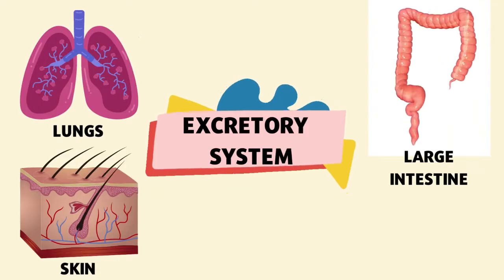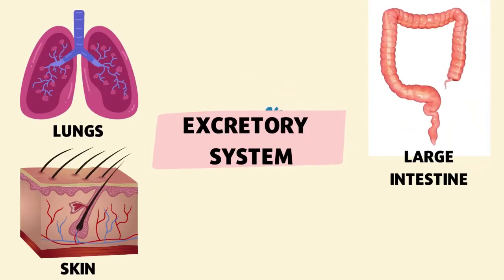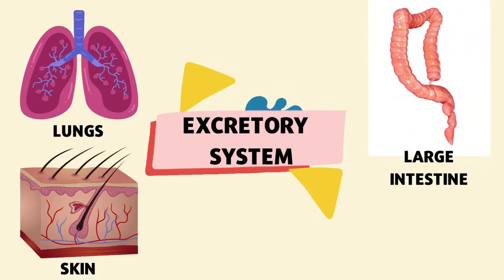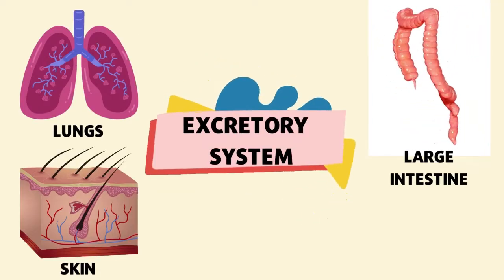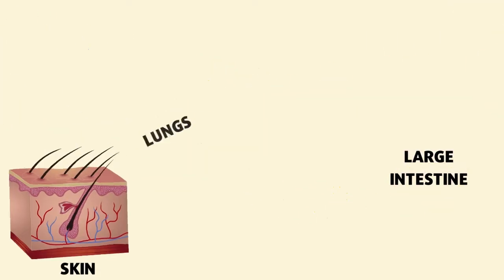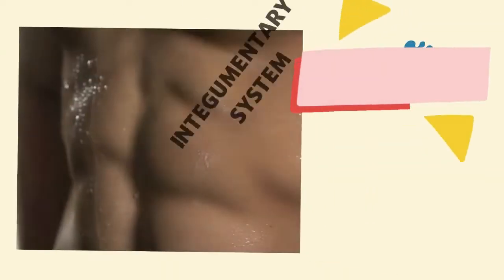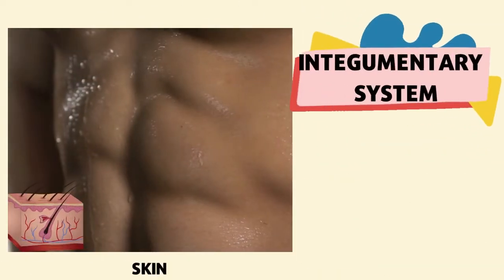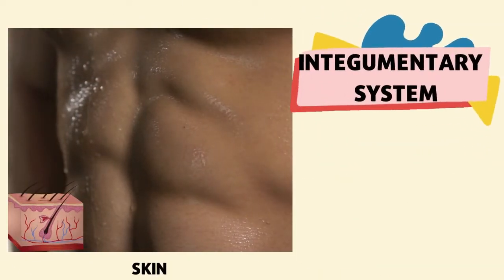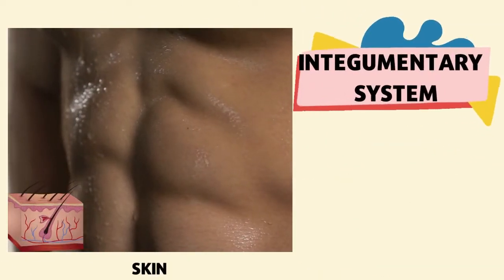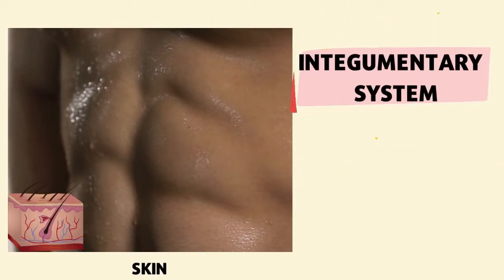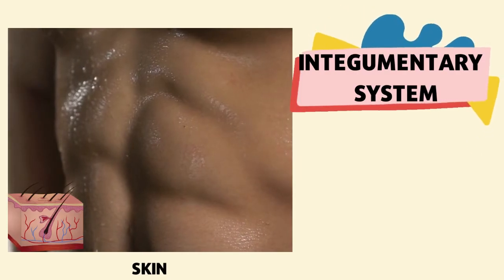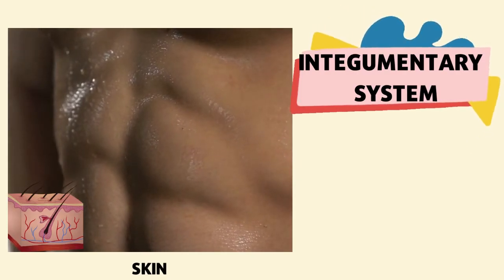The third one is our skin. During perspiration, the skin is a part of the integumentary system. It excretes waste from the sweat glands.